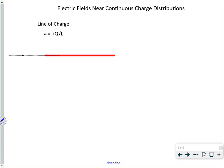So what we have here is a line of charge of finite length, and we're going to say it has length L.